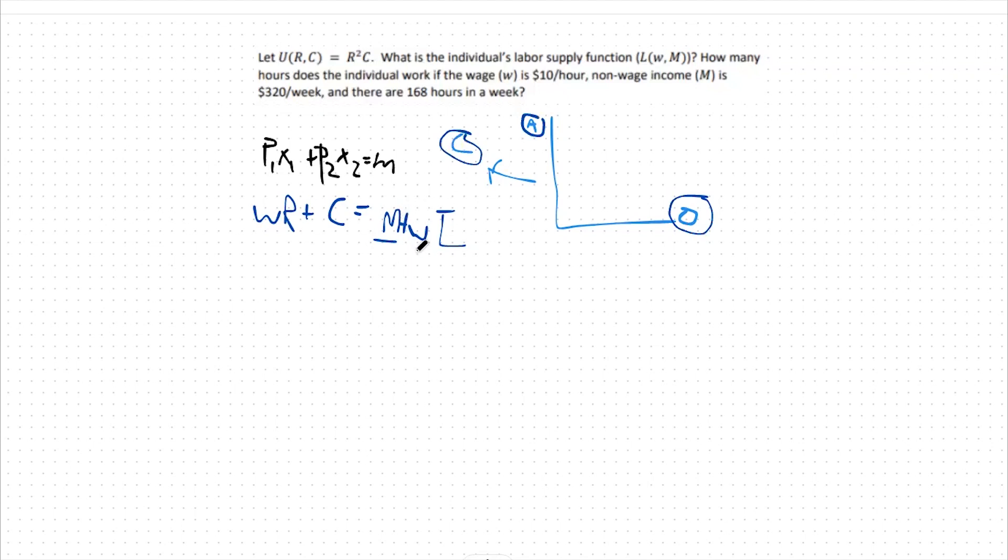On the other end we have the amount of money that I earned from working. W represents again our wage whereas L bar represents the number of hours I possibly could have worked.